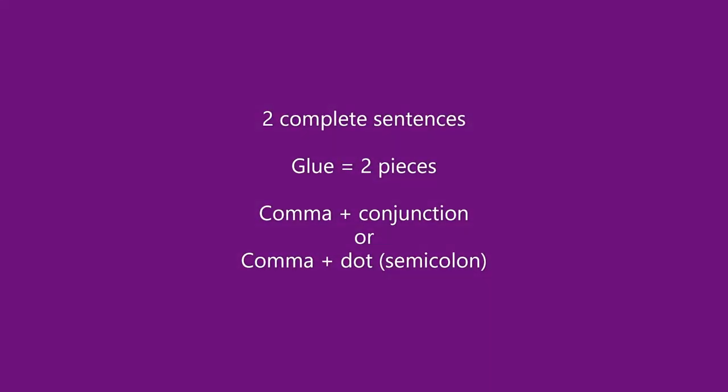I bet I know what some of you are thinking — 'I don't have to make any of these errors if I just stick to writing simple sentences.' If you're watching this video, it's because your teacher wants you to incorporate compound sentences in your writing. Should all of your sentences be compound? No, that would be boring. You should have some simple and some compound. But when you do your compound, you need to do them correctly. Remember: take two complete sentences and use two pieces of glue — either a comma plus a conjunction, or a comma plus a dot, which is a semicolon.